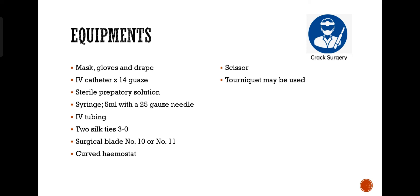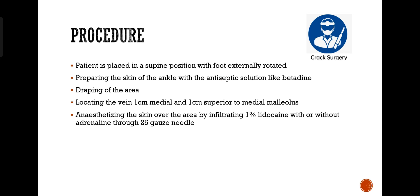Equipment required: mask, gloves, drape, IV catheter 14-gauge, sterile preparatory solution, 5 ml syringe with 25-gauge needle, IV tubing, two silk ties of 3-0, surgical blade number 10 or 11, curved hemostat, scissors, and tourniquet may be used.